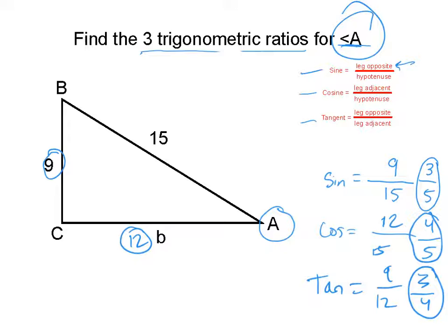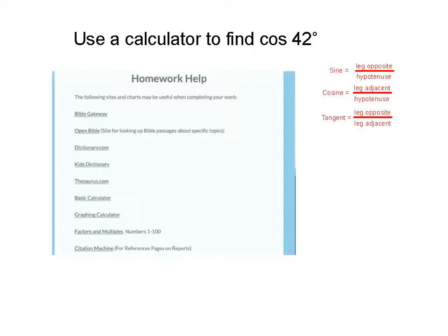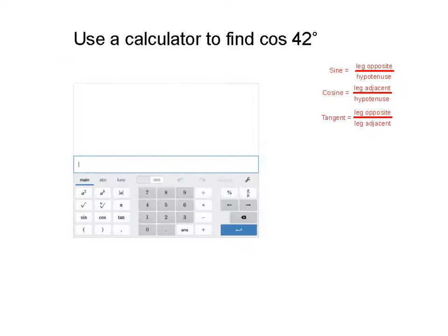They could ask you to do that for angle B or angle C as well. In fact, in your book practice problems, they do. But once you see it once, it makes a lot of sense. They're also going to let you use a calculator today to find cosine, tangent, and sine. You'll find a nice calculator on our homework help page. Use the basic calculator, not the graphing one — we're not going to be graphing lines today. Click on the basic calculator and it'll look like this.